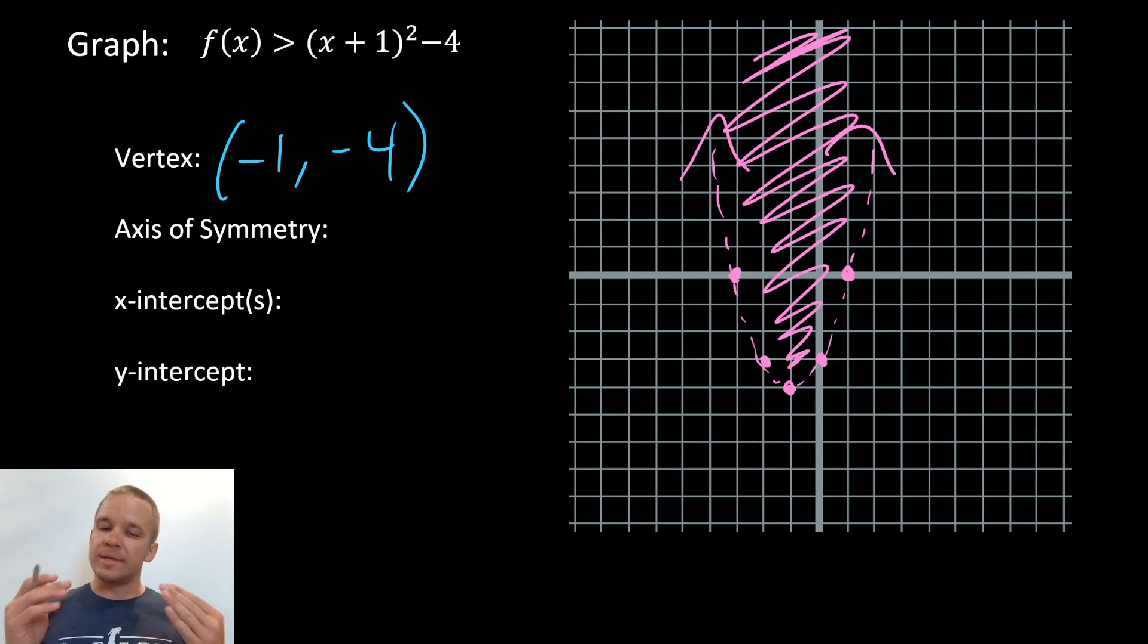All right, that's where I look. You can always do a test point. If you plugged in 0, 0, you would see that the inequality holds true. Thus, you would shade on the inside where that point exists.